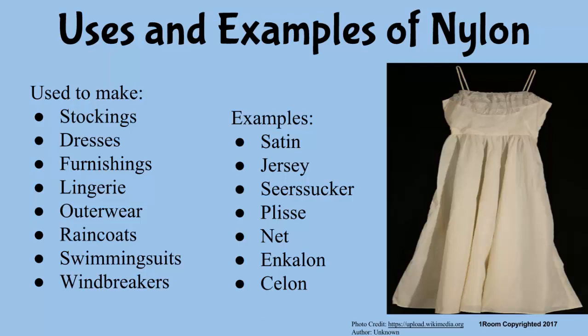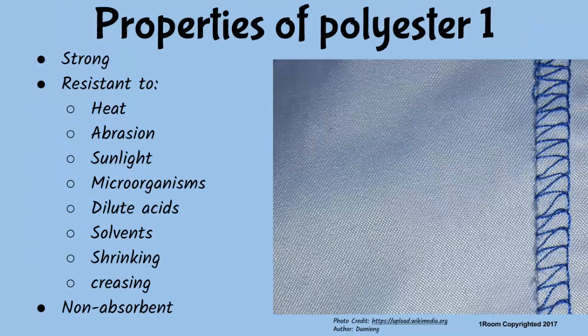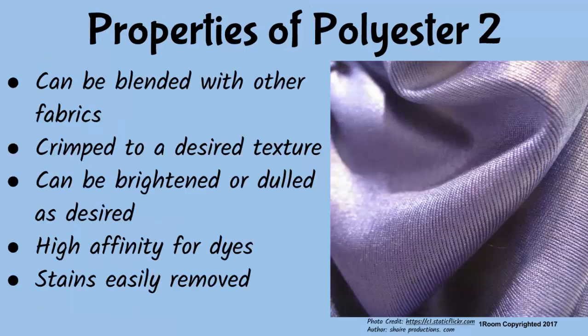Polyester is similar to nylon in many ways. It is very strong and resistant to abrasion, heat, sunlight, dilute acids, microorganisms, and solvents. It is also non-absorbent and resistant to shrinking, creasing, and stretching. One advantage over nylon is that it can be blended with other fabrics and crimped to produce the desired texture, can be either bright or dull depending on production, and stains and dirt are easily removed. It also has a high affinity for dyes.